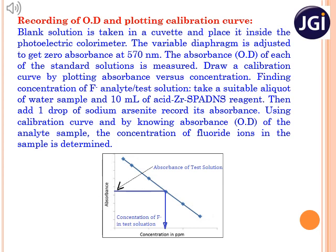Now we have to calculate the fluoride concentration in an unknown water sample. For this, a solution is to be prepared as follows: take a known volume of water sample containing fluoride ions, add 10 ml of acidic zirconium SPADNS reagent, and also add 1 drop of sodium arsenite to remove chloride interference. Record its optical density, then plot this value on the y-axis and by drawing intersections as shown in the graph, the fluoride concentration in the unknown water sample is calculated.